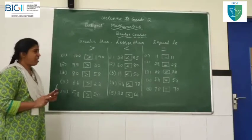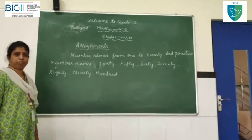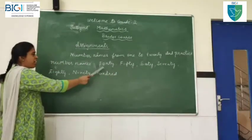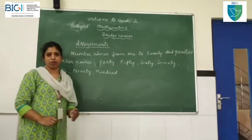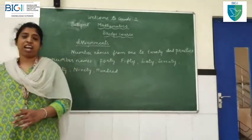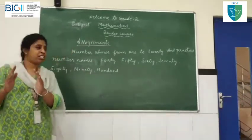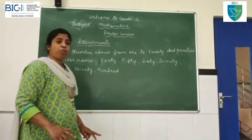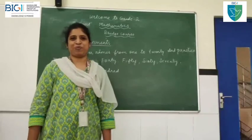I hope you all understood, children. Did you all understand? Now, I will be giving you your assignment, children. Practice number names from 1 to 20 and the tens: 40, 50, 60, 70, 80, 90, 100. Children, keep a notebook — practice these in your home book. I will meet you in the next session, children. Stay home, stay safe. I will guide you in the next session.